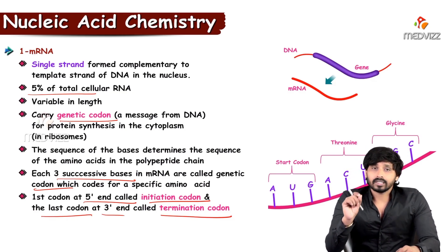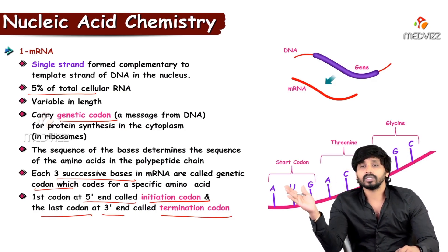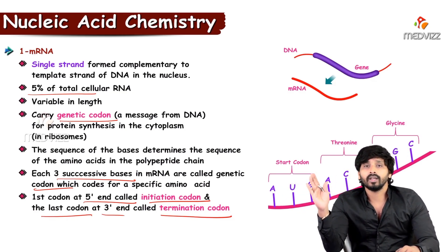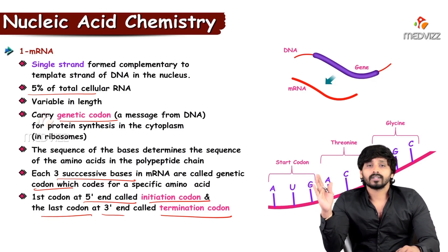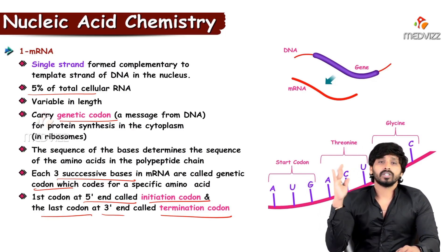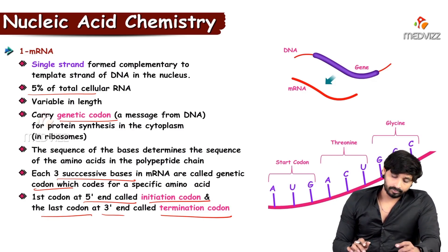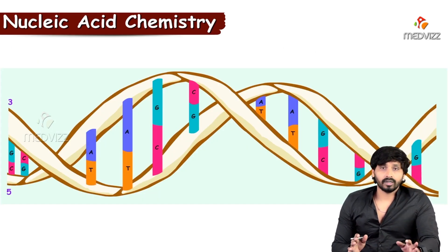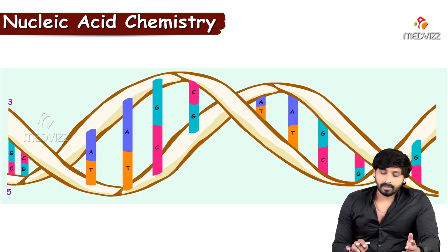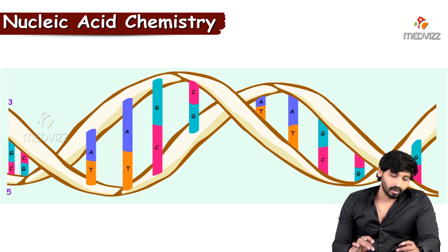The last codon at the end of the RNA chain, at the 3 prime end, is called the termination codon. DNA is double-stranded, but mRNA is single-stranded.